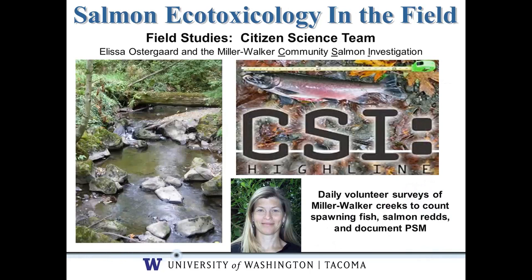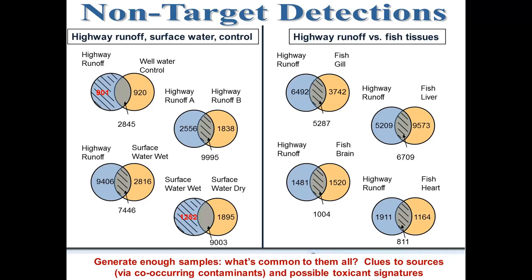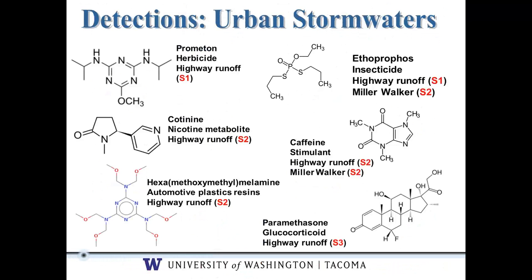We also work with citizen scientists — a whole bunch of people who go out into urban creeks every day. If they see a fish die, they call us up, we come and get it, we collect the water there, and that's one of the ways our samples are generated. We compare the chemicals we detect in the surface water and the highway runoff. We look for chemicals that we're detecting in the highway runoff, and we're watching those chemicals move from the stormwater into the fish, which helps us prioritize which chemicals we should focus the most on.